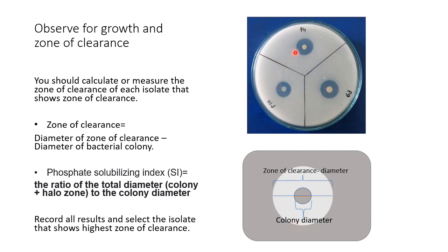The plate of Pikovskaya agar is opaque, so once the phosphate surrounding the bacterial colony is solubilized, you will see clear zones. That is how you interpret that you have isolated some phosphate solubilizing microbes. You should measure the zone of clearance of each isolate, and the colony with the highest zone of clearance is the one you should select for further study.